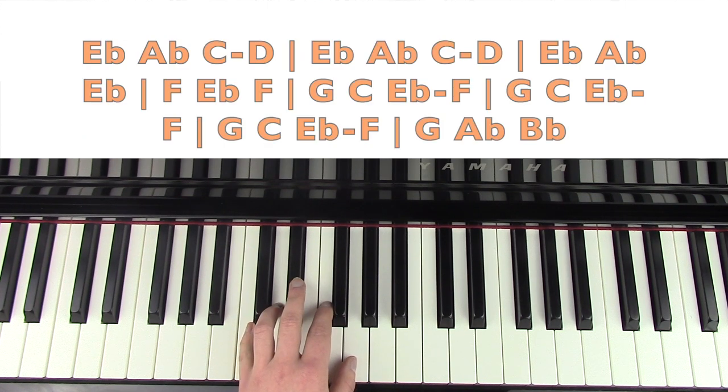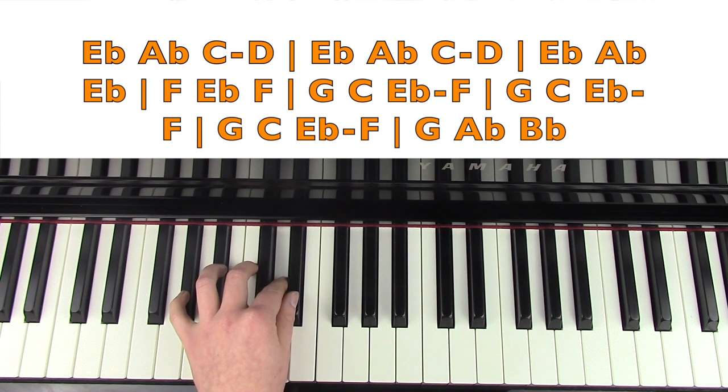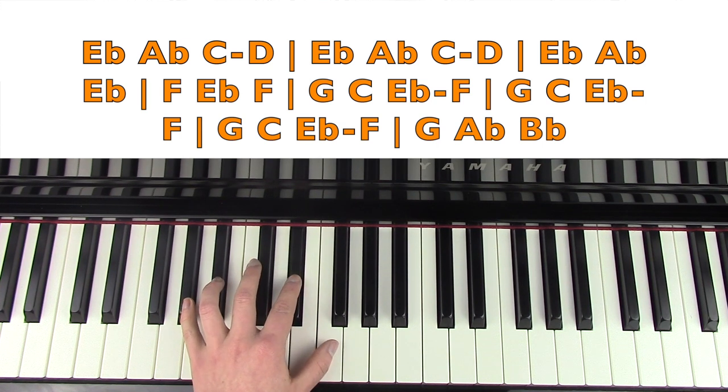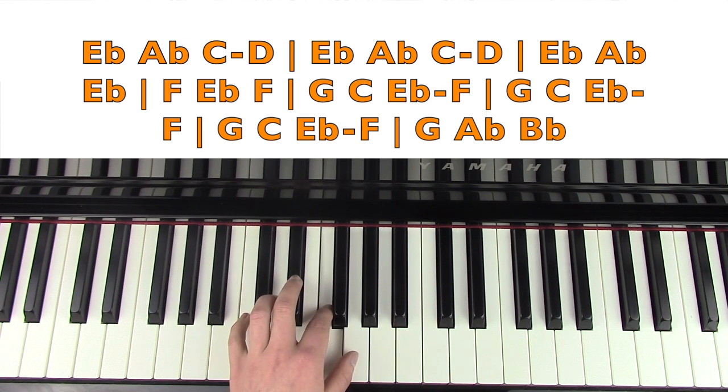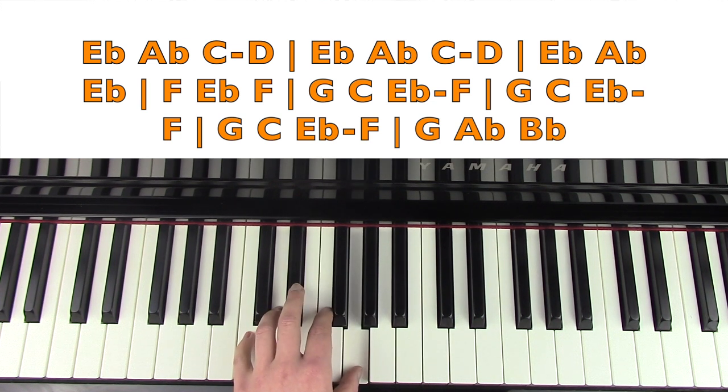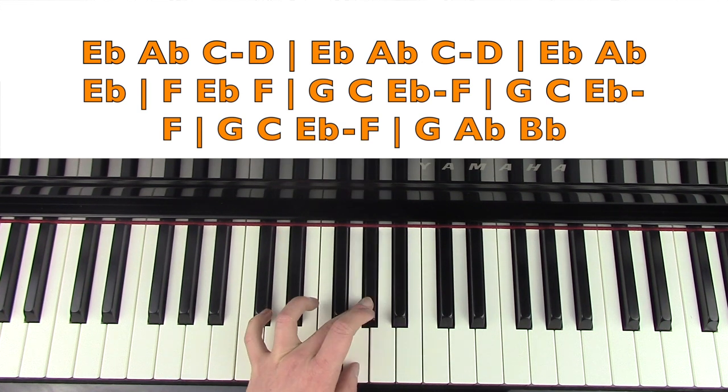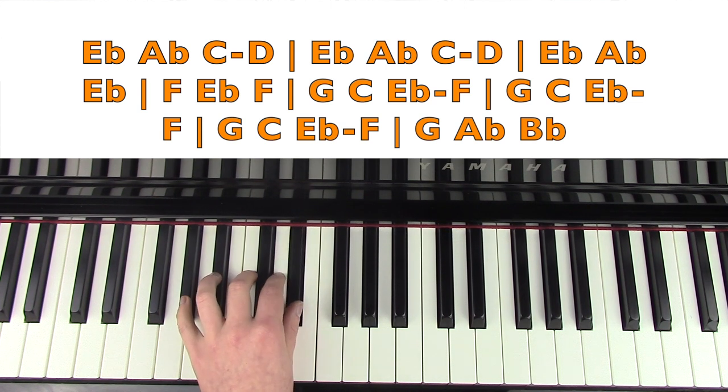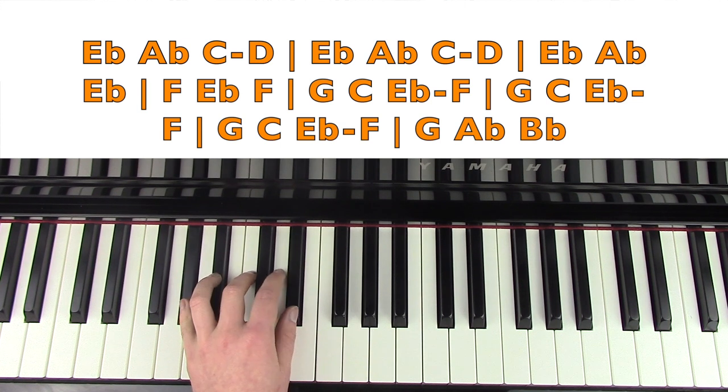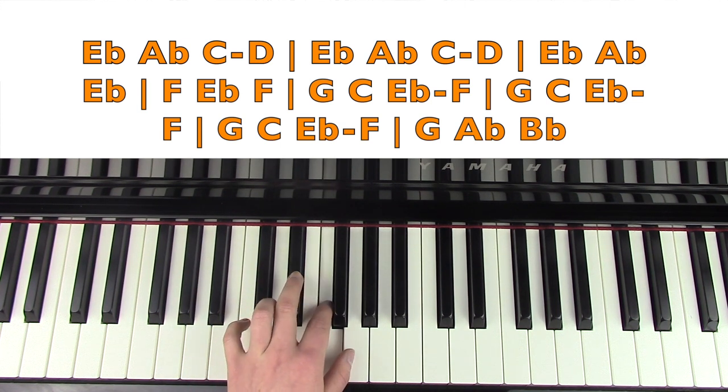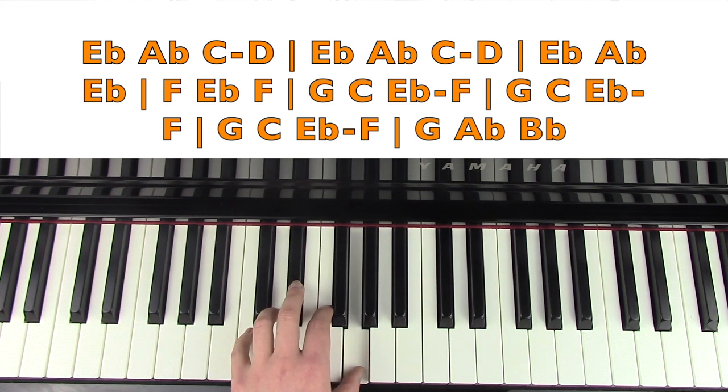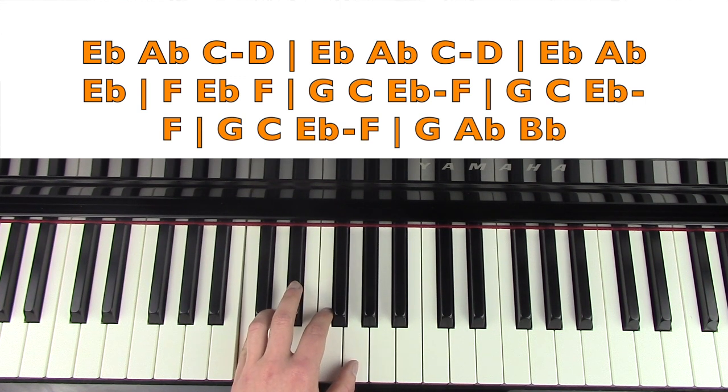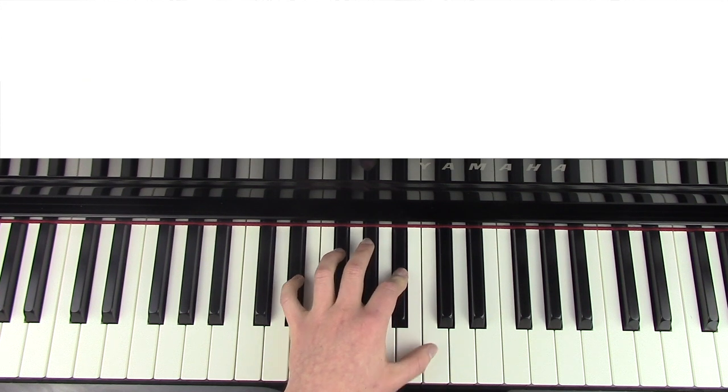The next eight bars goes E flat, E flat, A flat, C, A flat, C, D, E flat, A flat, C, D, A flat, E flat, A flat, F, E flat, A flat, F, G, C, A flat, F, G, C, A flat, F, G, C, E flat, F, G, A flat, B flat. I'll just do that last bit again, ready to start that sequence again. I'm going to play that left hand all the way through the second theme now.